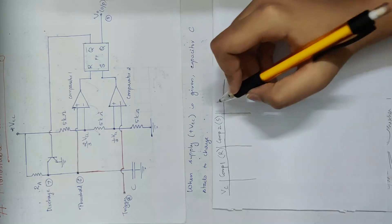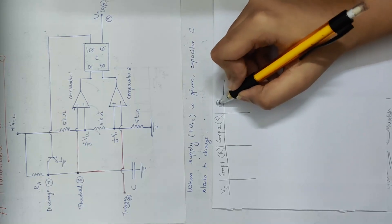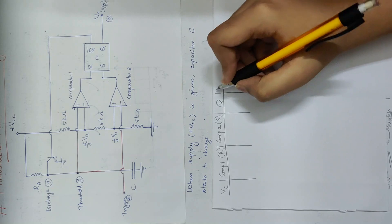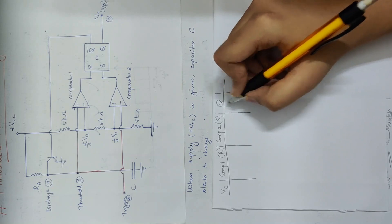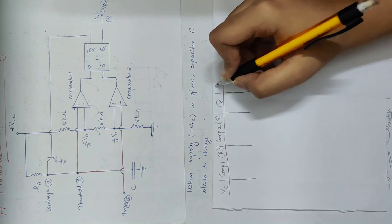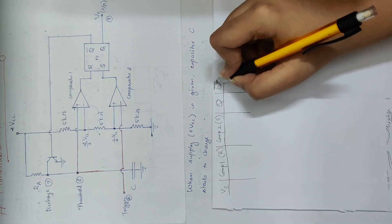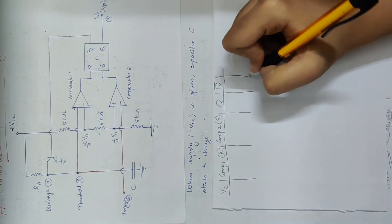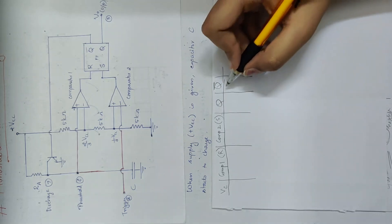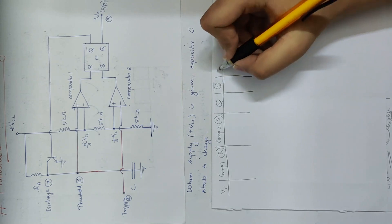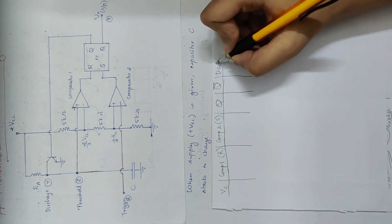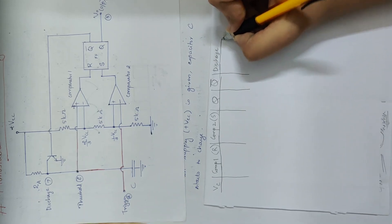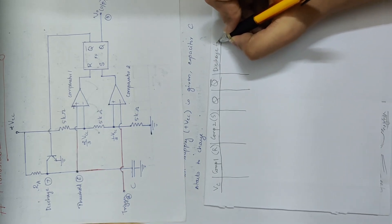The comparator output is dependent on the R and S values. Q is the complement, that is, Q bar. The discharge transistor turns on and off based on these values.